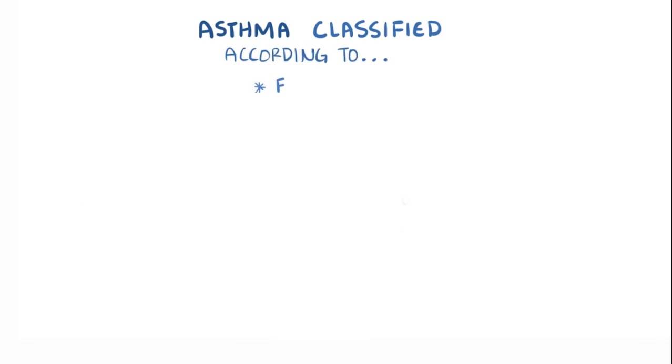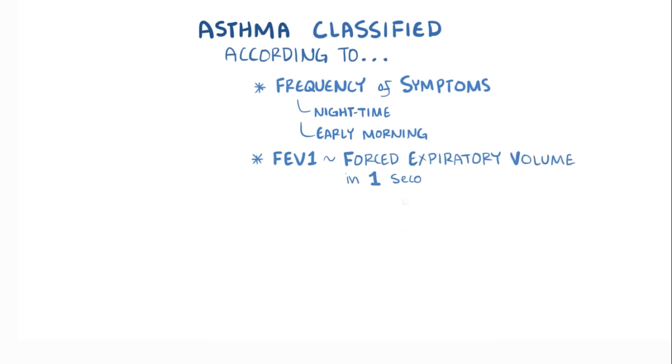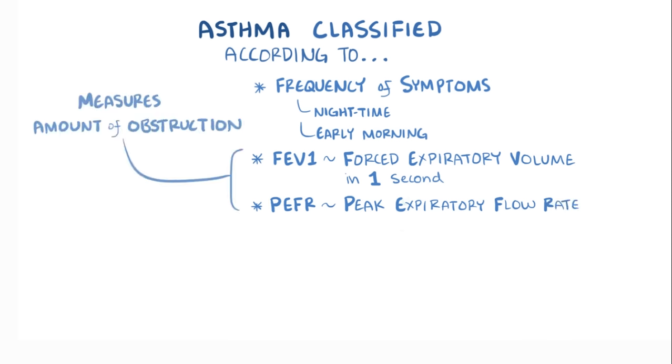Asthma can be classified according to the frequency of symptoms, in particular nighttime and early morning symptoms, the FEV1 or forced expiratory volume in one second, the PEFR or peak expiratory flow rate, both of which measure the amount of obstruction in the airways, and finally how often a person is using asthma medication to help with the symptoms.